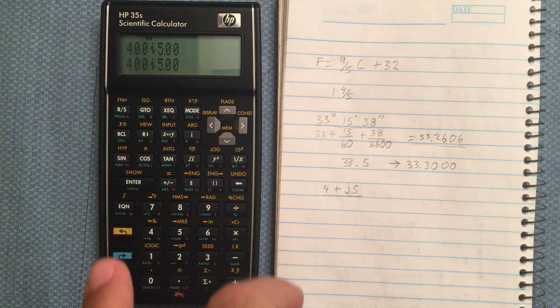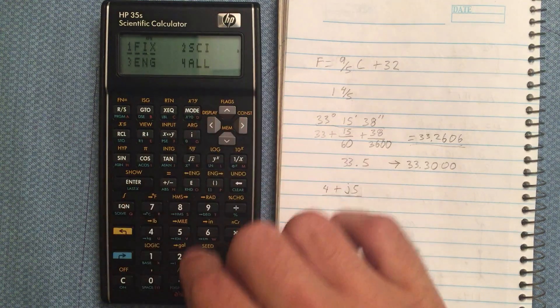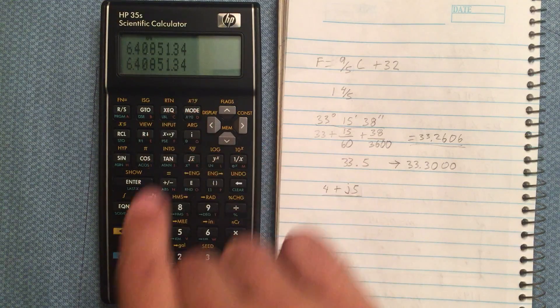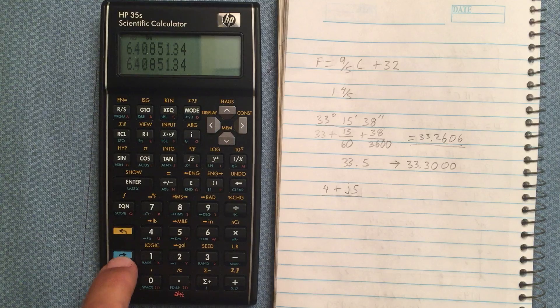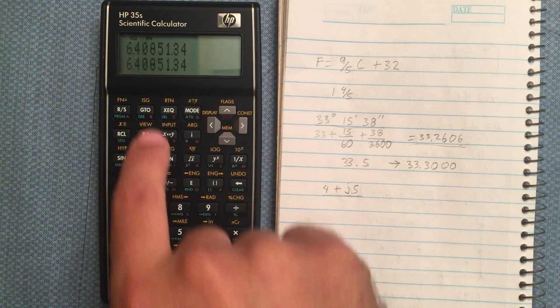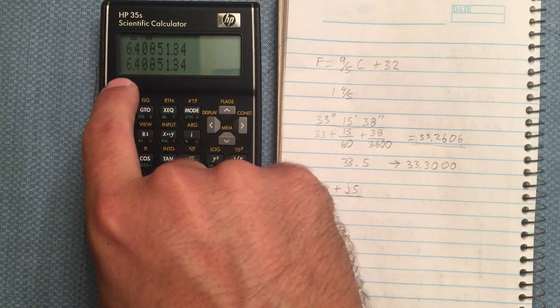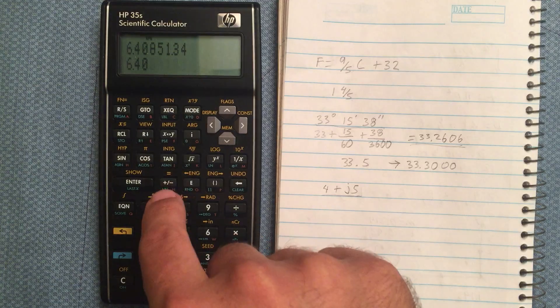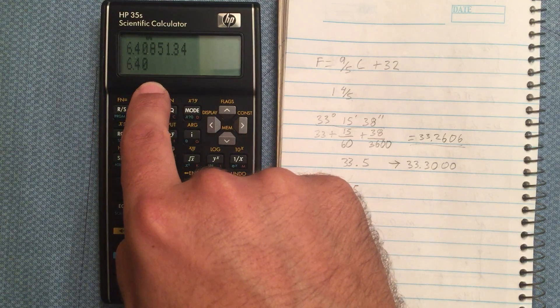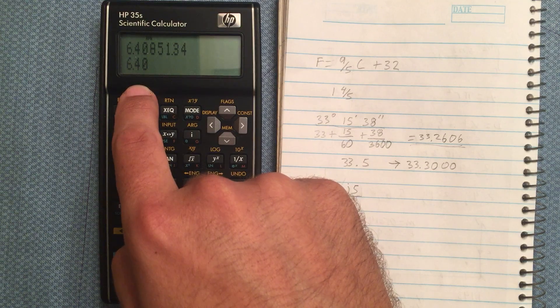Now there's a couple things you can do at this point. If you were in polar mode, you could take the absolute value, that's blue shift and abs, and that would give you the magnitude here, the 6.4. So that's a quick way of getting it. It's not as useful for me in polar mode as it is in rectangular.